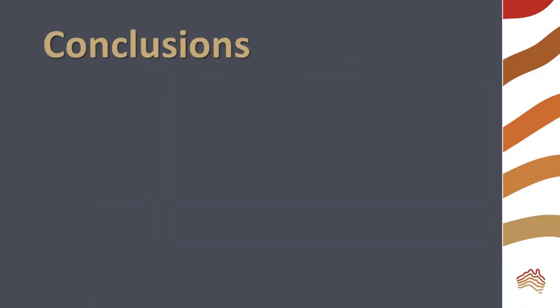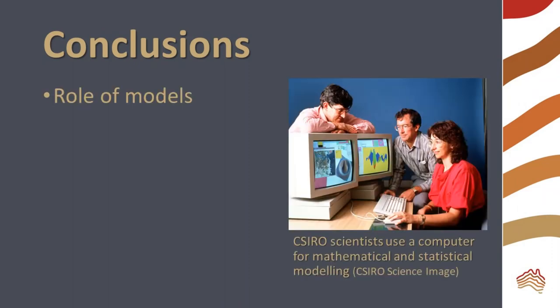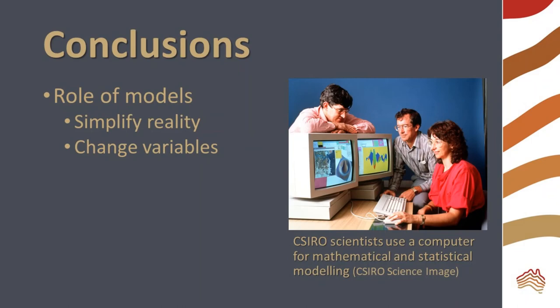What conclusions can we draw from these experiments? We used a model of oxygen isotopes in the oceans. Models are very important in science. This model is a simplified version of reality that helps us to understand how oxygen isotopes are used to determine past temperature. This model allows us to vary the amount of energy applied to the system and see the results. Models help us to understand the real world.